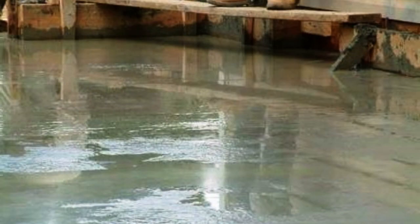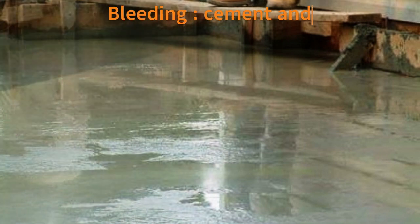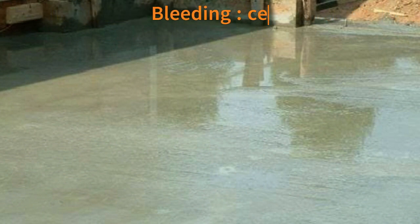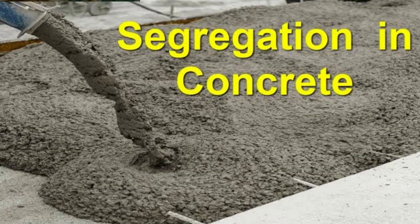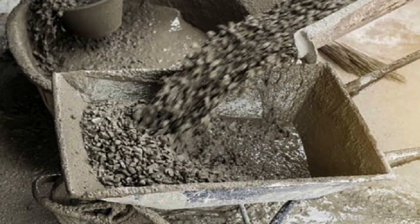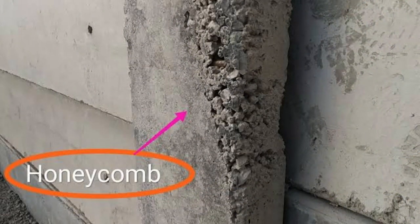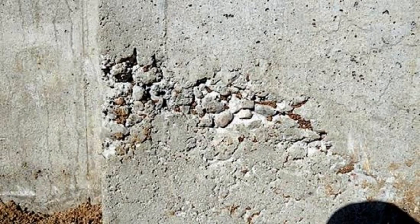Question 6: Water bleeding, segregation, and honeycombing. Bleeding phenomenon: when cement and water come to the top and aggregates settle down, this is called bleeding — it is due to specific gravity of material and improper placing. Segregation means separation of ingredients of concrete. Honeycombing: after removal of formwork, there may be some cavities left in concrete; this is called honeycomb, and it occurs due to improper compaction of concrete.